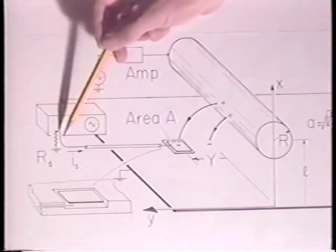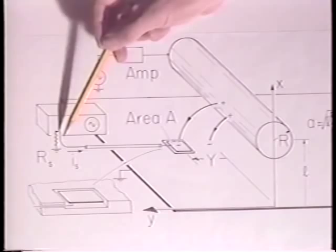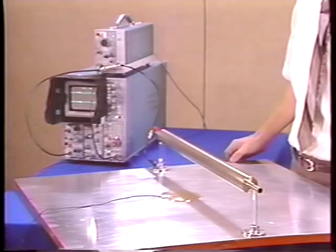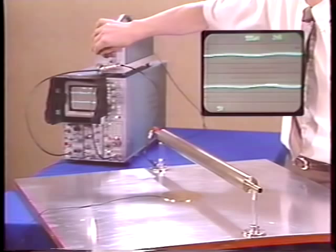The upper trace is the applied voltage. The lower one is that of the probe. Because the probe voltage is the time derivative of the applied voltage, the signals are 90 degrees out of phase.